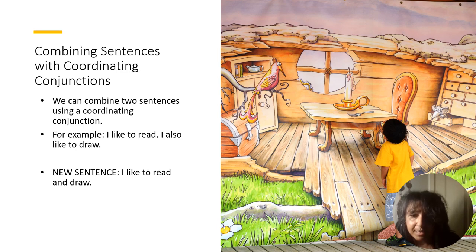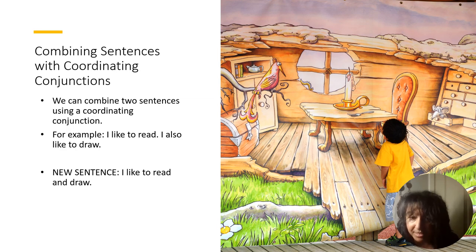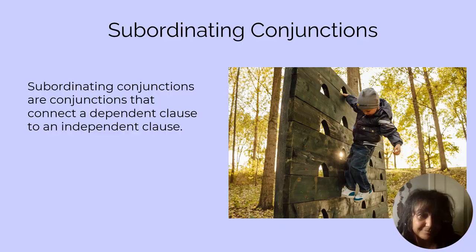Coordinating conjunctions again combine sentences. Many times we can combine two sentences using a coordinating conjunction. 'I like to read. I also like to draw.' The new sentence would say: 'I like to read and draw.' Now let's get into subordinating conjunctions.